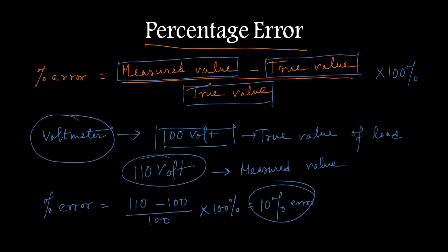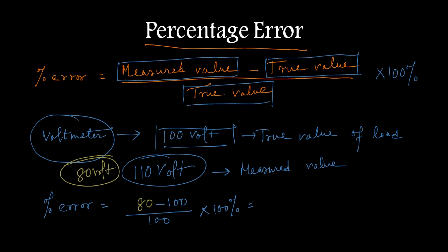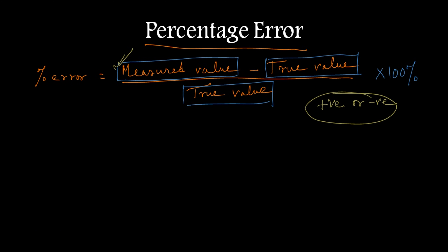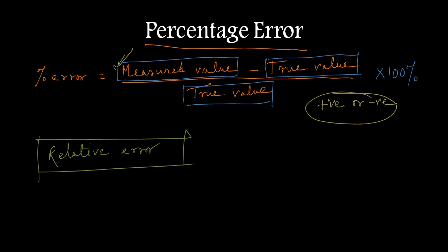Now if the voltmeter reads 80V, then percentage error will be 80 minus 100 divided by 100, giving minus 20%. So the percentage error value may be positive or negative depending upon the value obtained after measurement. This is similar to relative error where we perform the same kind of operation to find the error between the measured value and the true value.